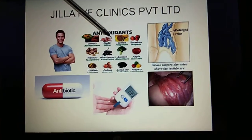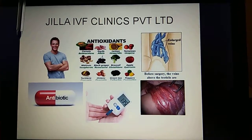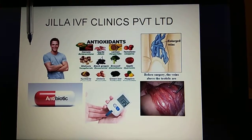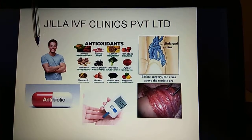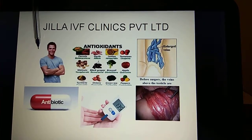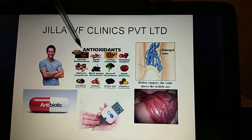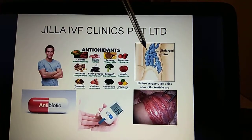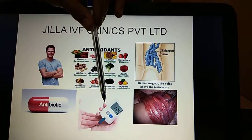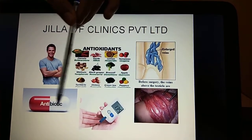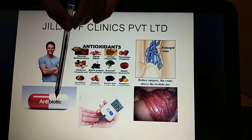When we find a semen analysis report with poor sperm count, motility, or pus cells, the first thing we do is advise the man to have healthy habits — good exercise, diet, getting out of stress, a good sleeping pattern, good antioxidants in food, fresh vegetables and fruits. If he has any surgical problem like a varicocele, that should be surgically corrected. If he is diabetic, then he should have his sugars brought under control. If there are any infections in the genital organs, then they should be treated thoroughly with antibiotics.